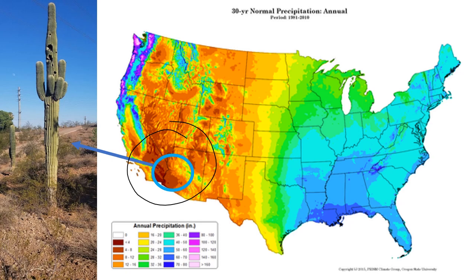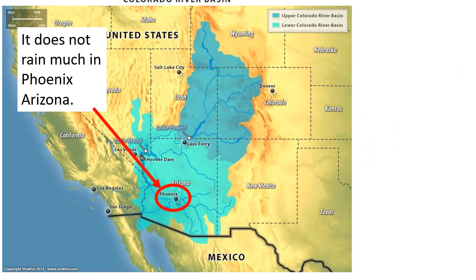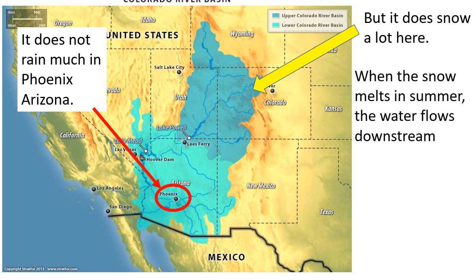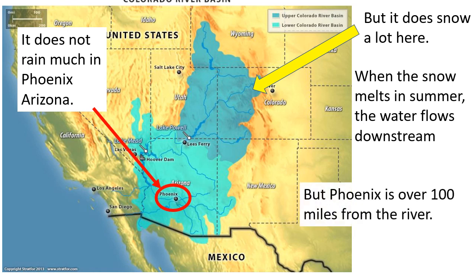Phoenix is a very large city, and Southern California has lots of big cities, but not much rain. So we get that it doesn't rain much, but there are millions of people in Phoenix. Way up in the mountains of Colorado, it snows a lot, and when the snow melts, it runs into the Colorado River — a big river with lots of water. But Phoenix is over 100 miles from the Colorado River, not like the Chattahoochee here in Atlanta, which runs right through the middle of the city.